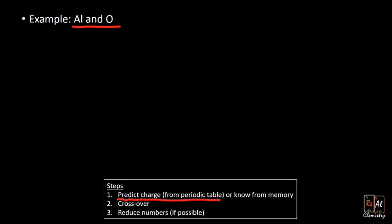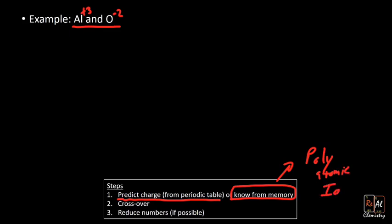If you go to the periodic table, the columns tell you the charge — I'll link to a video below that shows you how to do that. The column for aluminum gives me +3, and the column for oxygen gives me -2. Sometimes you have to know charges from memory. That's true for polyatomic ions — ions made up of more than one atom that have a charge you can't predict from the table, so you just have to memorize it. In all chemistry classes you have to memorize a list of polyatomic ions and their charges.